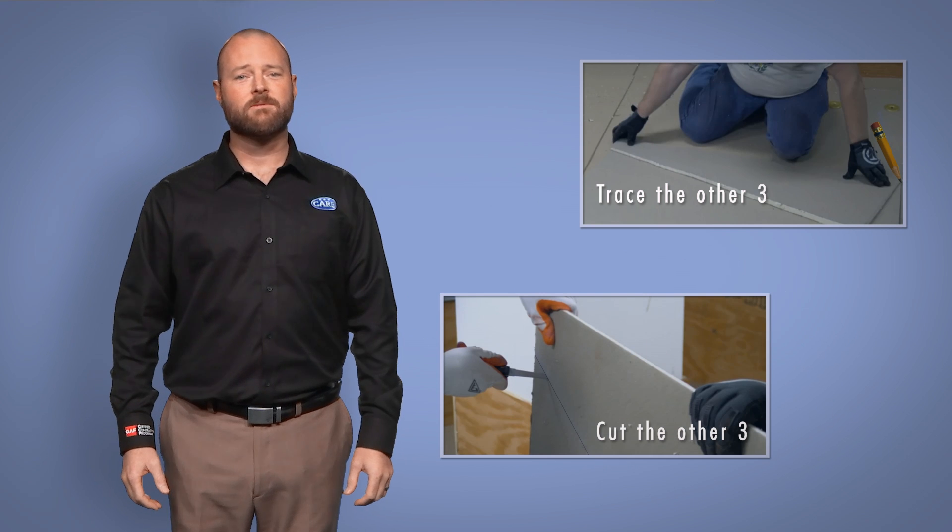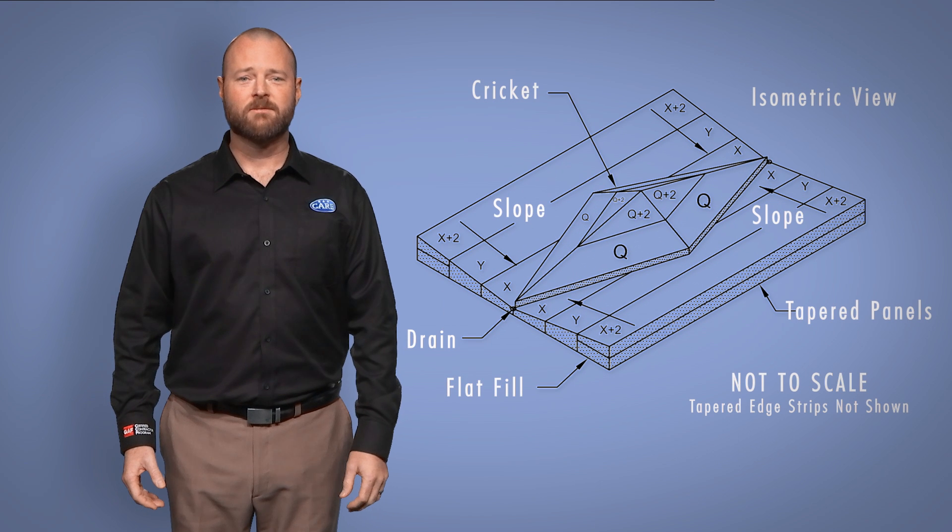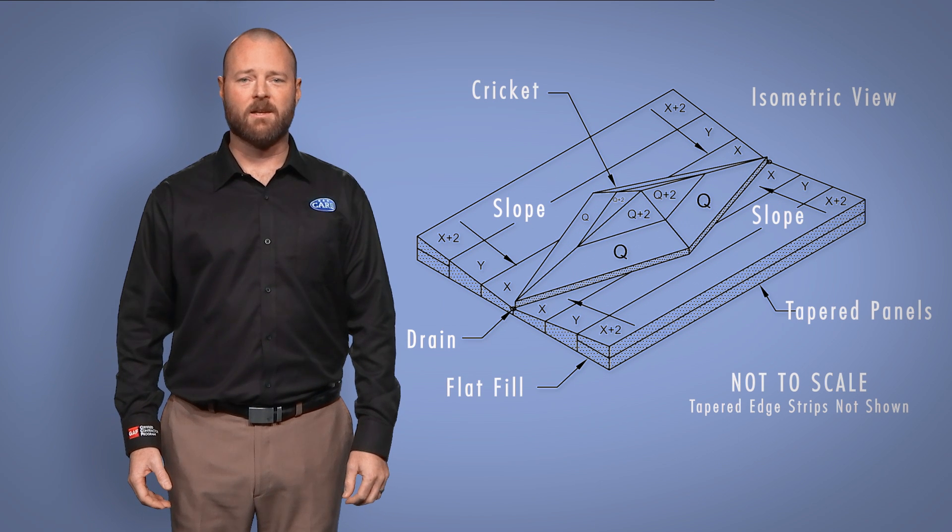Carefully cut all of your pieces out, assemble, and attach. Once you've finished, you have a symmetrical cricket in your valley and you've saved valuable labor time on the roof.